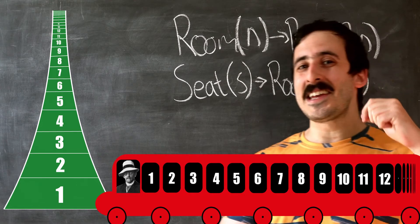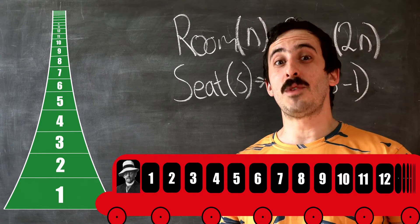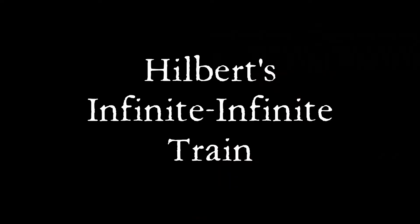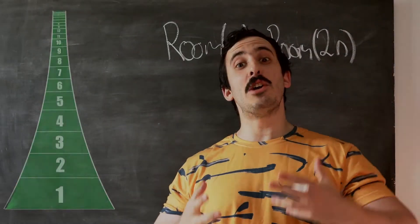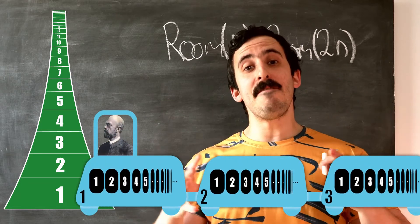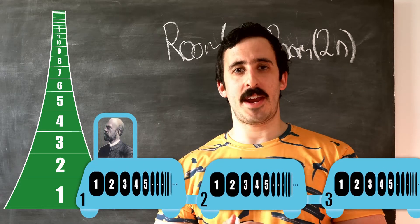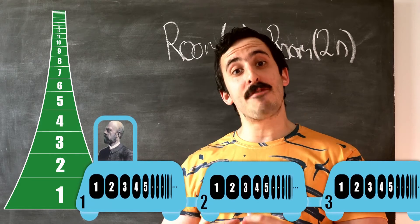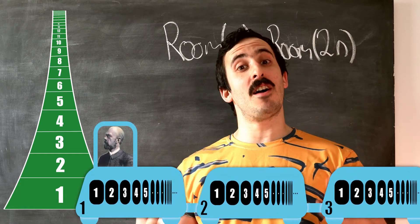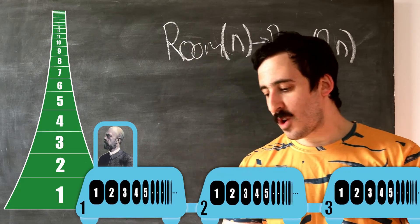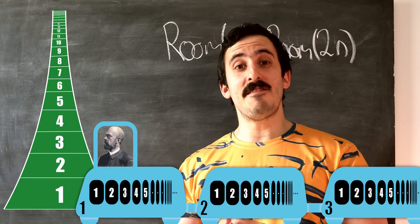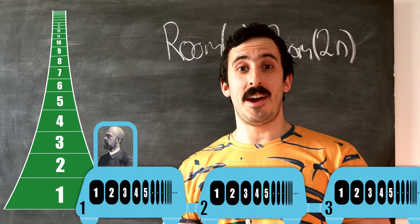Things are going to get more complicated still for Hilbert, as we next look at Hilbert's train. Hilbert's train works like this: there are an infinite number of carts on this train, and within each and every cart there are an infinite number of seats. Of course, every seat in every cart is occupied. The question is: can the manager accommodate this now much larger infinity of guests in the already fully occupied hotel? Whereas before the bus just had an infinity of seats, we now have an infinity of carts and an infinity of seats — almost an infinity times infinity.